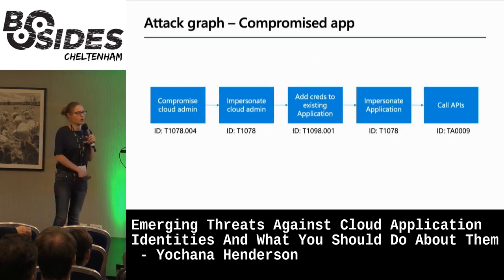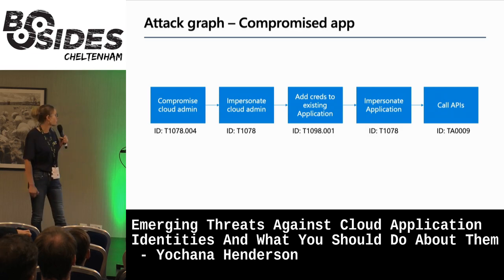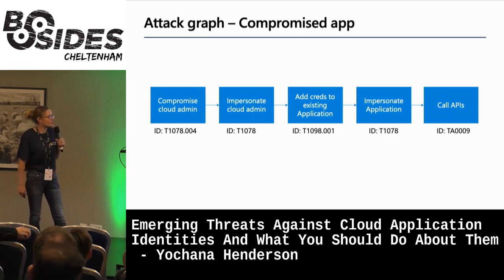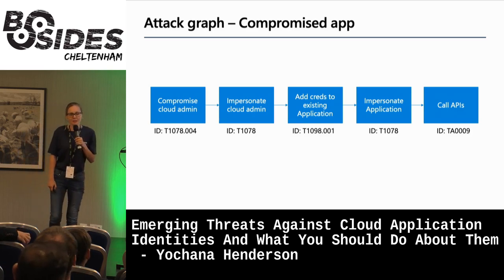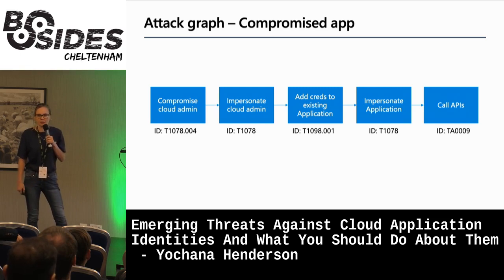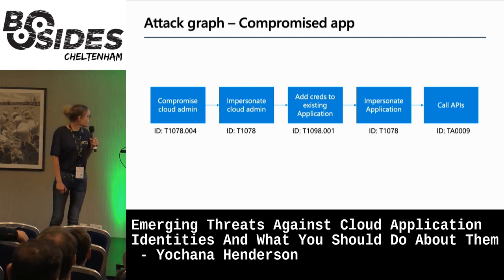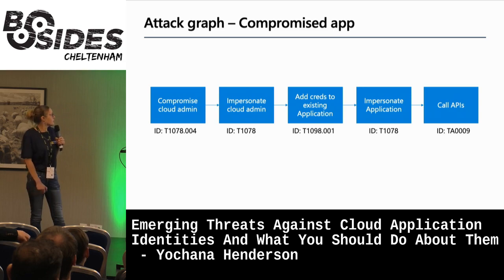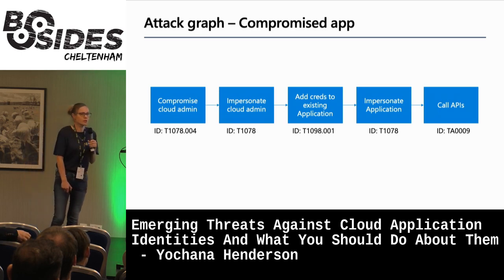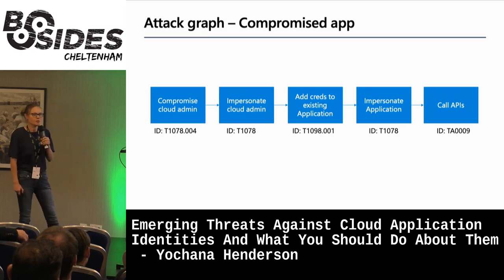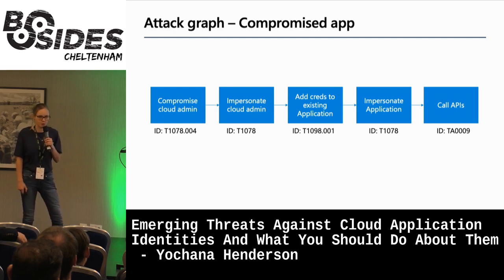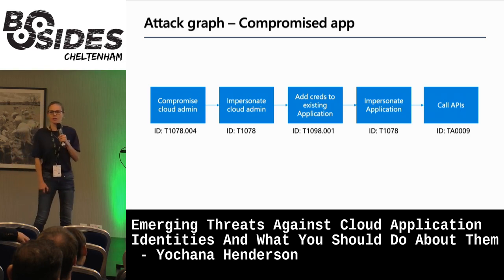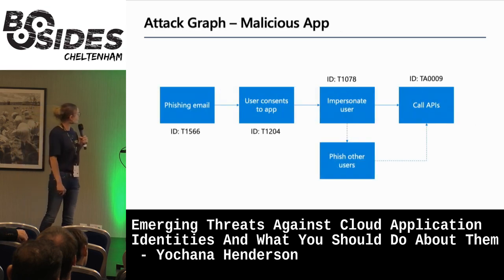These are the typical attack graphs. For a compromised app, it normally starts with a compromised admin account - a cloud application privileged or global admin. The account is then impersonated, a credential is added to your application, and the attacker impersonates the application to call an API that nine times out of ten is completely overprivileged. If something doesn't need directory read-write-all, don't give it read-write-all.